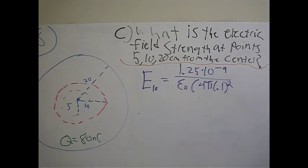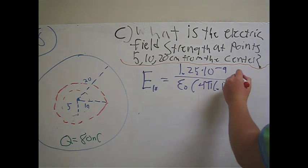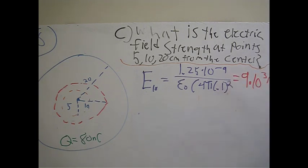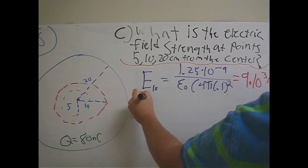And this gives us a value of 9 times 10³ newtons per coulomb for 10 centimeters.